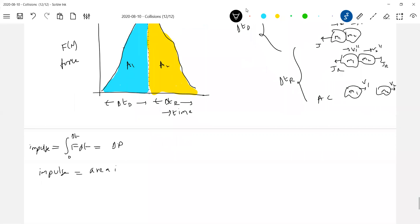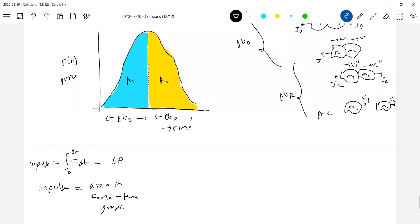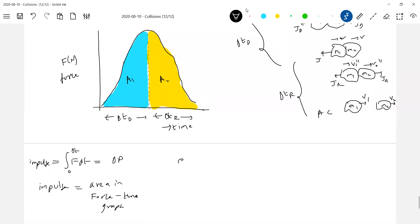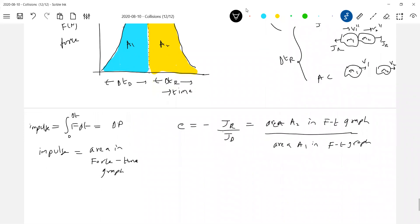What is the definition of impulse? Impulse of reformation by impulse of deformation. Impulse of reformation is area under Ft graph. Area A2 in Ft graph divided by area A1 in Ft graph. If these two areas are equal, what does it mean? What type of collision?